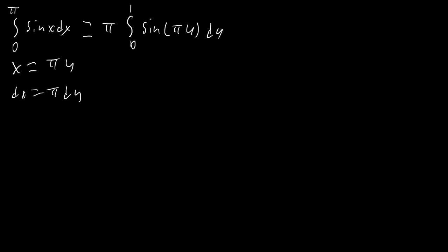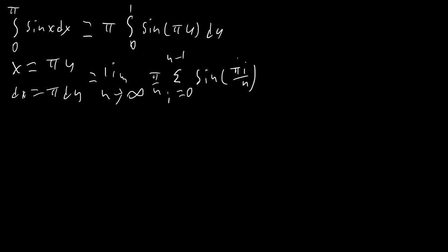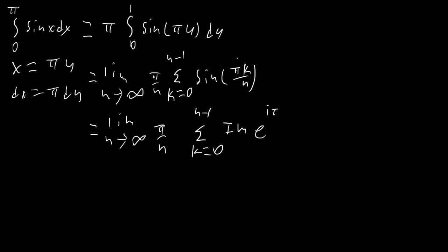Now to evaluate this integral, we apply the limit definition. We're going to write sine of pi k over n using imaginary numbers — I'll change the dummy variable from i to k to avoid confusion. We write this as pi times the limit as n goes to infinity of pi over n times the sum from k equals 0 to n minus 1 of the imaginary part of e to the i pi k over n. Since this is a sum, we can bring the imaginary part outside. Then we evaluate the inner sum using the geometric series formula, raising e to the i pi over n to the k-th power.